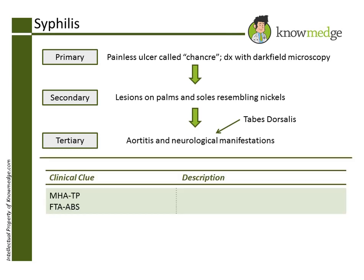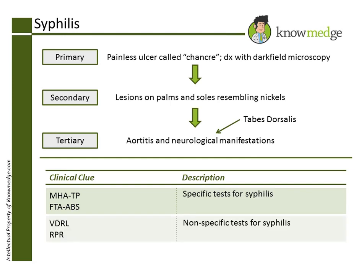MHA-TP and FTA-ABS are specific tests for syphilis, while VDRL and RPR are nonspecific. Therefore, choice B is incorrect.